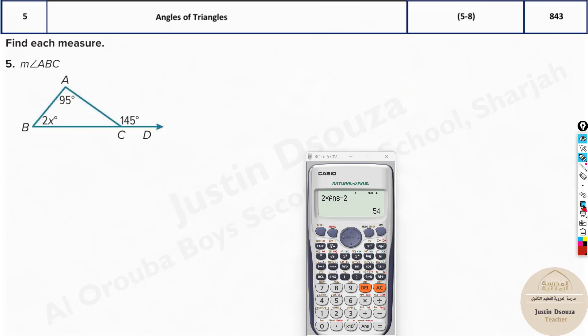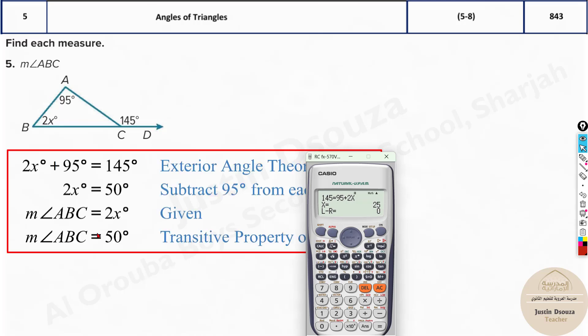Or else you can just remember it as a formula. So all you need to do is put it in the calculator. 145 will be equal to alpha equal to 95 plus 2x. And shift and solve, equal to, you need to press. This is the correct answer. But now we do not want the x value, we need to find ABC, this angle. 2 times 25 is 50. So the answer will be 50. Multiply this by 2.